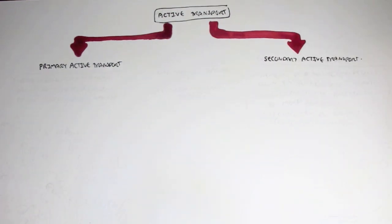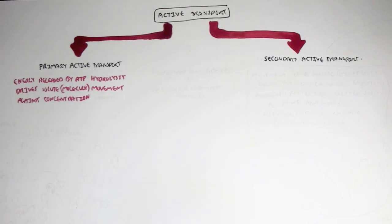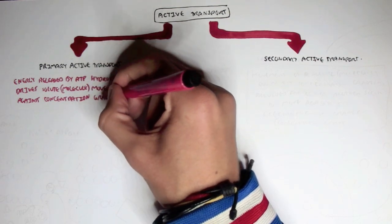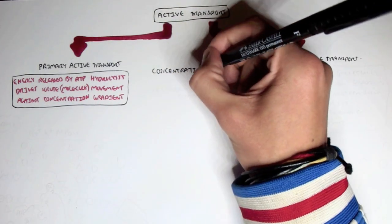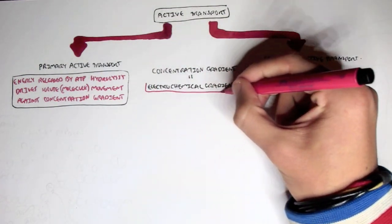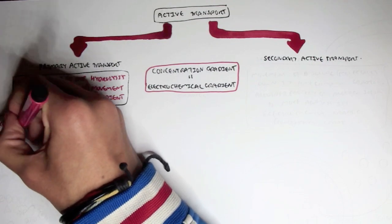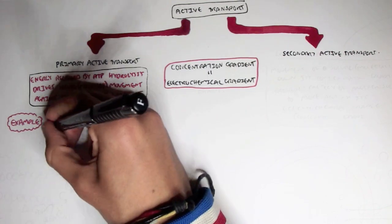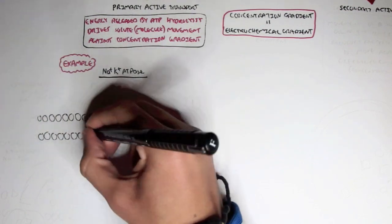Active transport can be divided into primary active transport and secondary active transport. Primary active transport is where energy released by ATP hydrolysis drives the solute or molecule to move against its concentration gradient — also called the electrochemical gradient. A good example of primary active transport is the sodium-potassium ATPase, or sodium-potassium pump, which you may have already heard of.